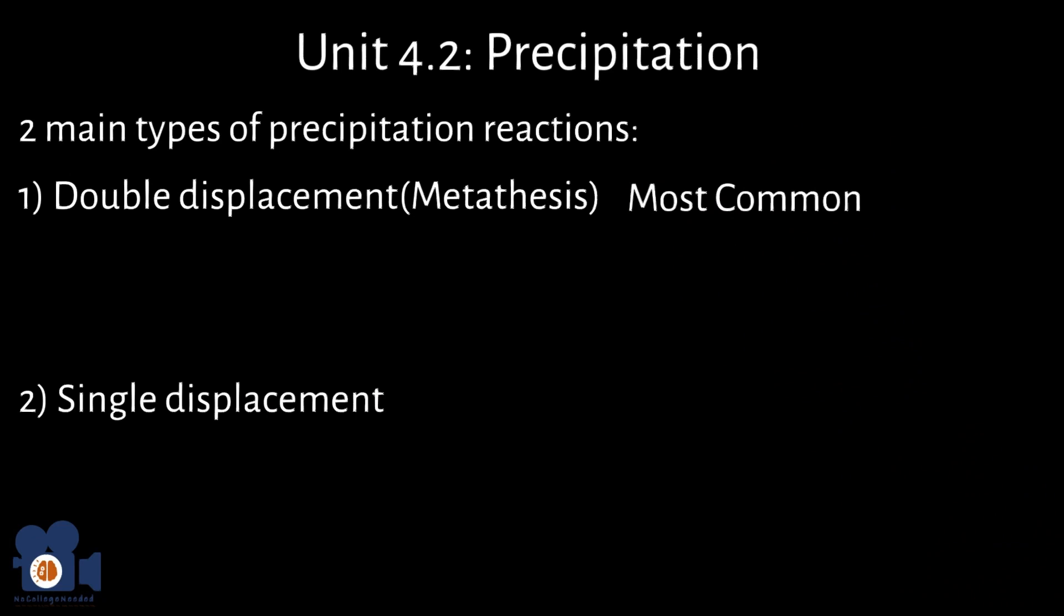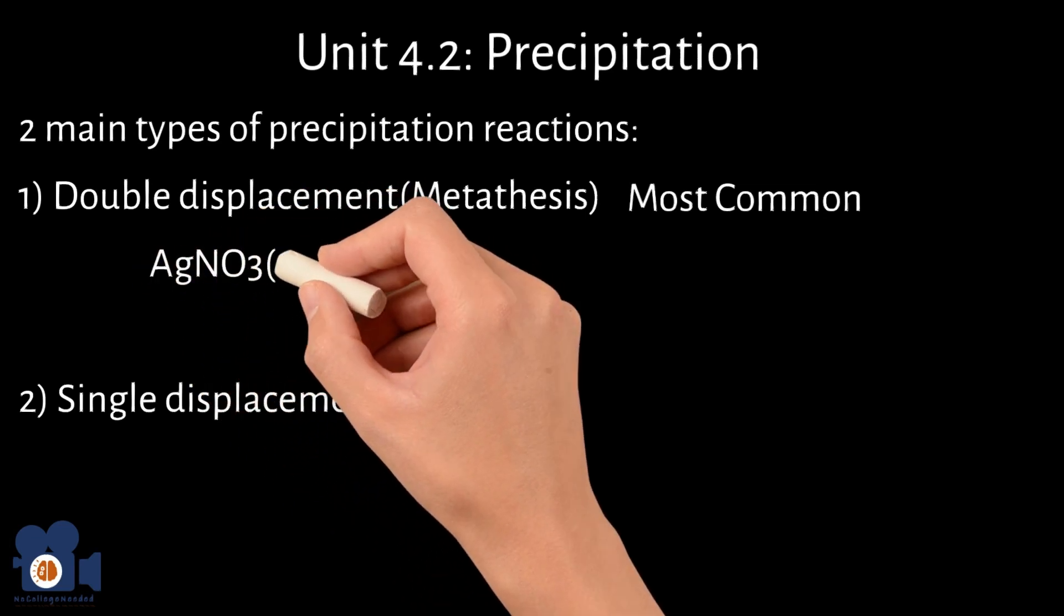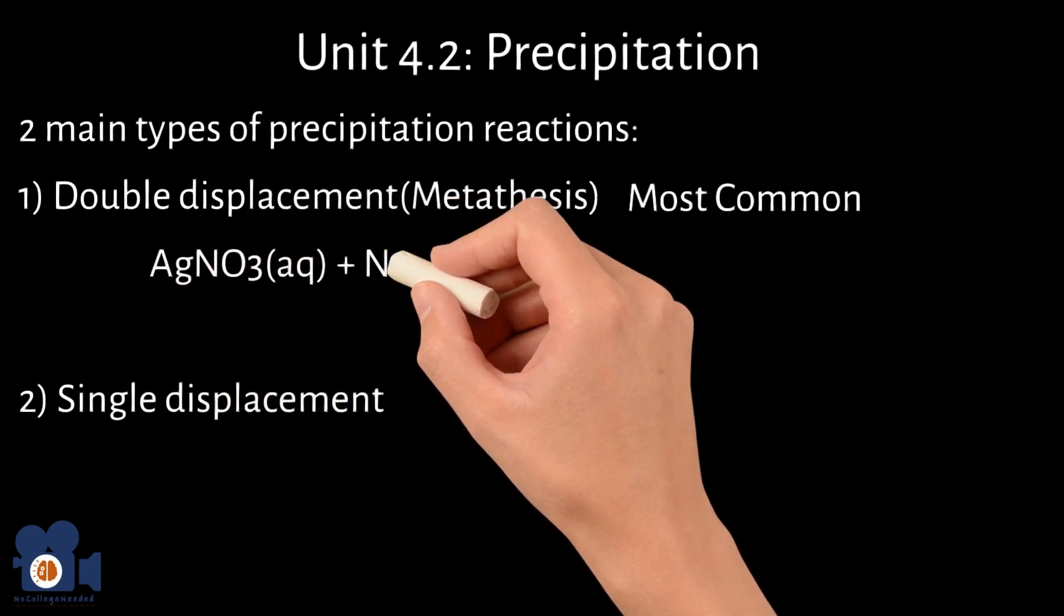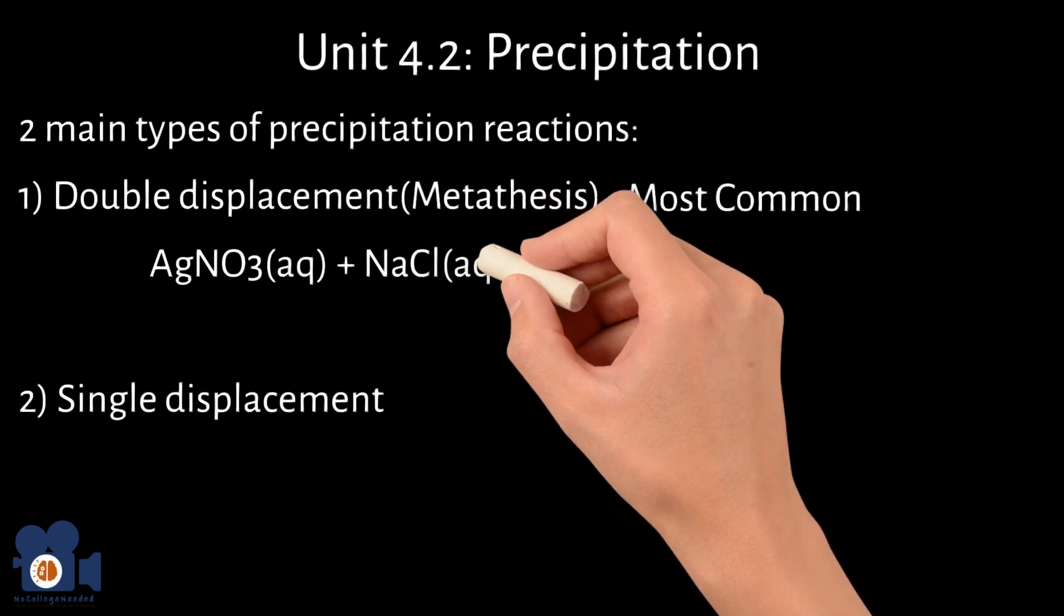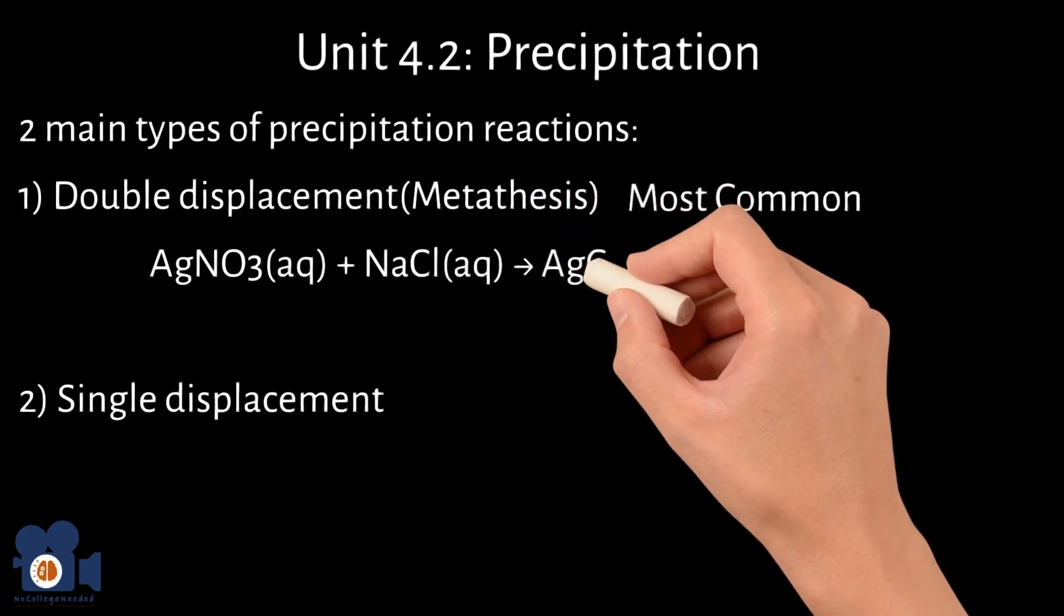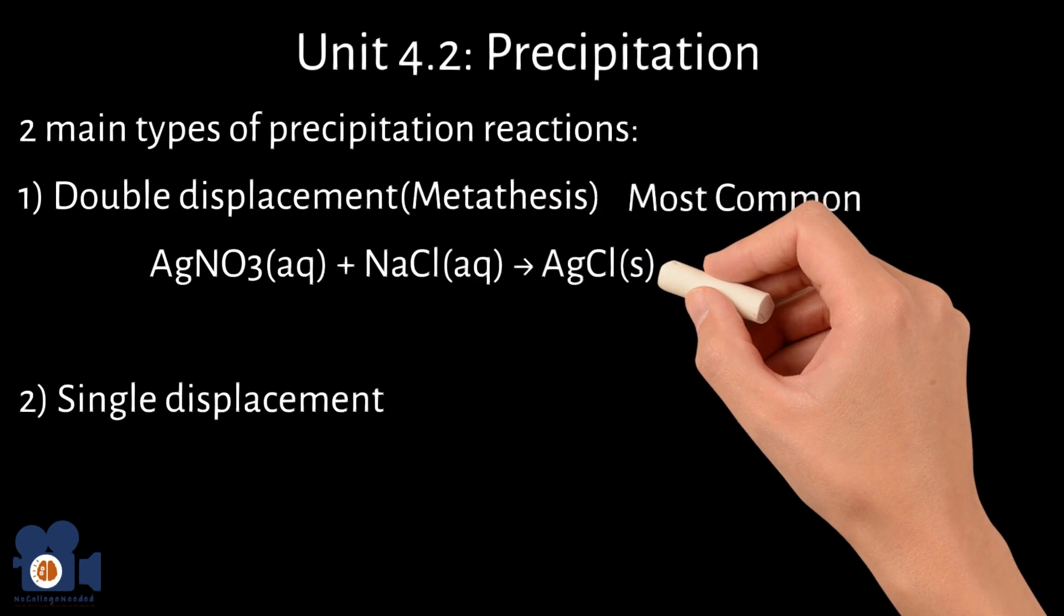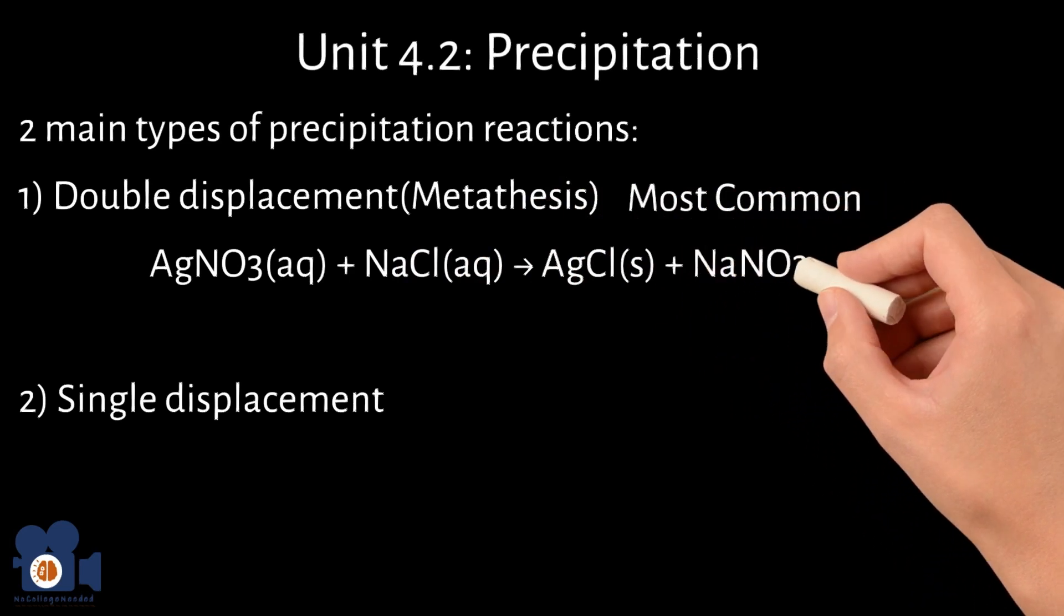For example, the aforementioned reaction between silver nitrate, AgNO3, and sodium chloride, NaCl, to form silver chloride, AgCl precipitate, and sodium nitrate, NaNO3.